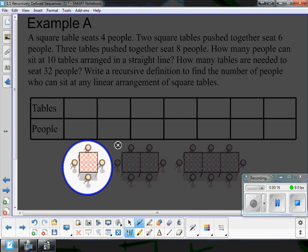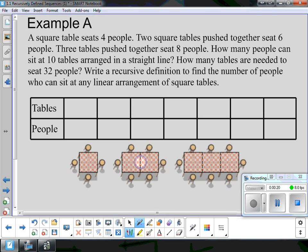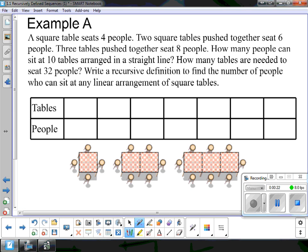And then if you push two of these tables together you can seat six as you see here. So as the one table slides in we have two more seats available. This guy right there and that seat right there. If you put a third table in, so we're making like a long banquet table.